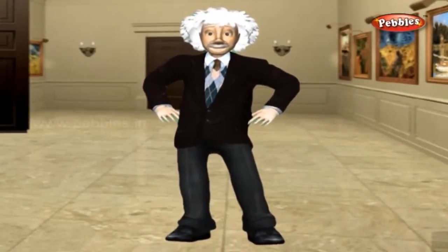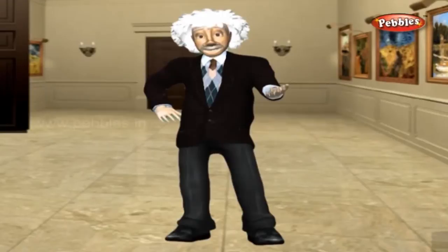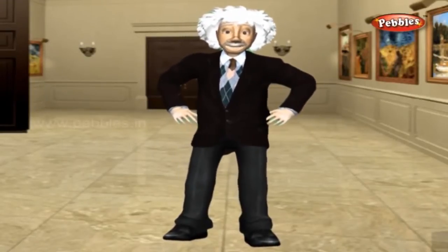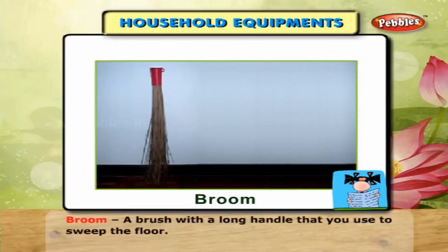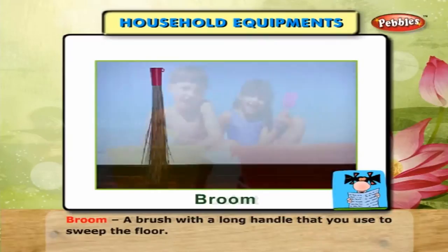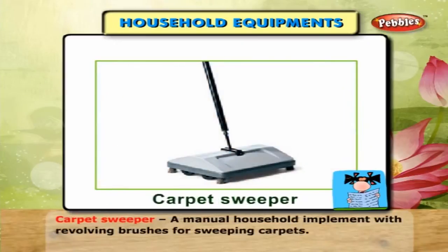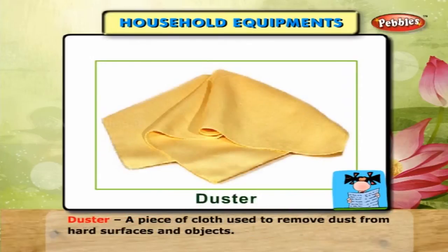Household Equipments: The machines and things that are used for household purposes. Broom — a brush with a long handle that you use to sweep the floor. Bucket — a container with a handle that you use to carry water.